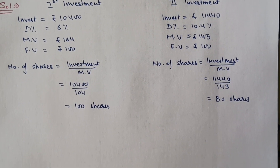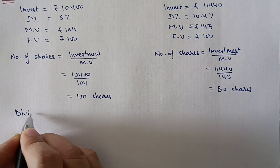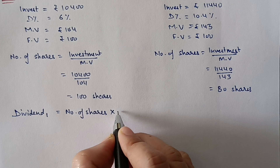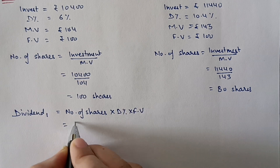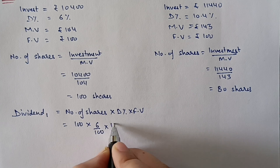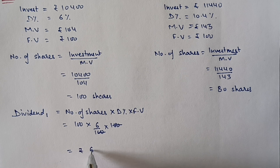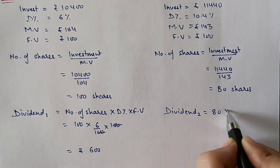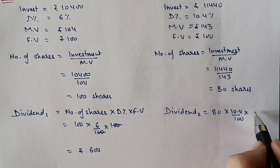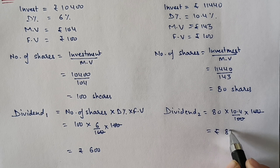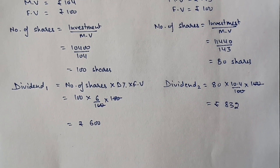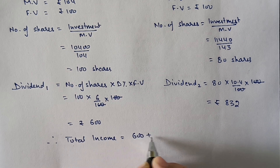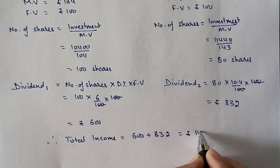Now calculating income from both investments. First case: dividend = 100 × (6/100) × 100 = 600 rupees. Second case: dividend = 80 × (10.4/100) × 100 = 832 rupees. Therefore total income = 600 + 832 = 1,432 rupees.